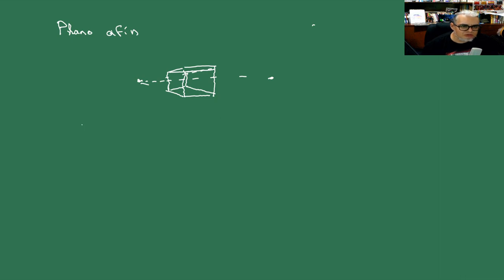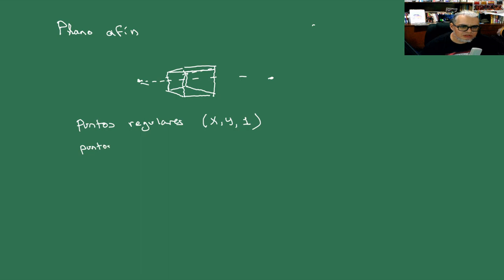Si nosotros dibujamos un cubo de esta forma, en principio debería ser más realista que de otras formas que lo hemos dibujado. Esto nos da cierta perspectiva de profundidad. Lo que se piensa es que acá atrás hay una línea en el horizonte hacia donde van a converger, por ejemplo, las rectas paralelas. El plano afín consiste de dos tipos de puntos: puntos regulares, que vamos a representar con tres entradas como XY1, y los puntos al infinito que son los puntos en la línea del horizonte, que vamos a representar como α, β, 0.